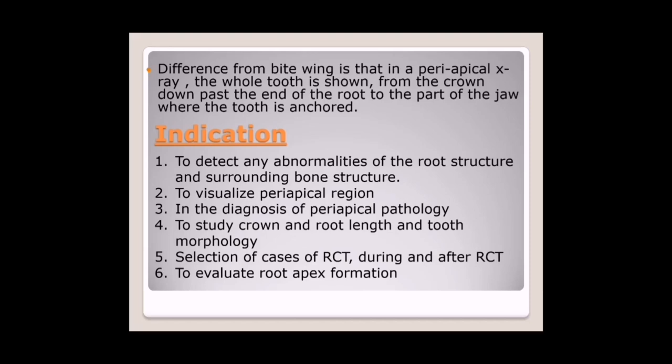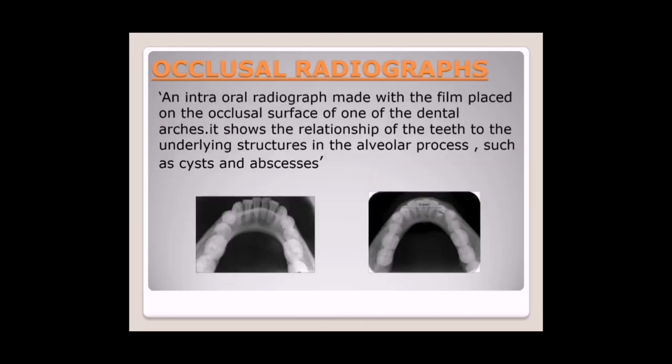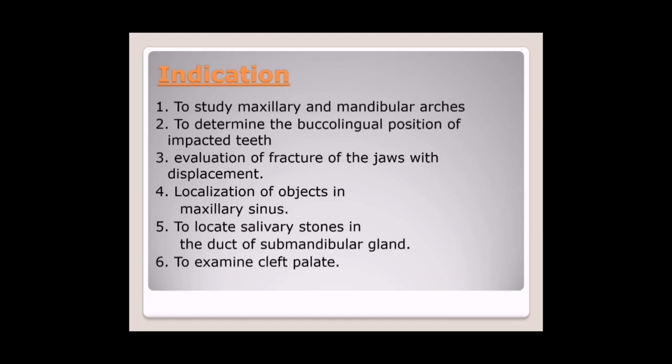Occlusal radiograph: an intraoral radiograph made with the film placed on the occlusal surface of the dental arches. It shows the relationship of the tooth to the underlying structure in the alveolar process, such as cysts and abscesses. Indications: number one, to study maxillary and mandibular arches; number two, to determine the buccolingual position of impacted teeth; number three, evaluation of fracture of the jaw with displacement; number four, localization of objects in the maxillary sinus; number five, to locate salivary stones in the duct of the submandibular gland; number six, to examine cleft palate.